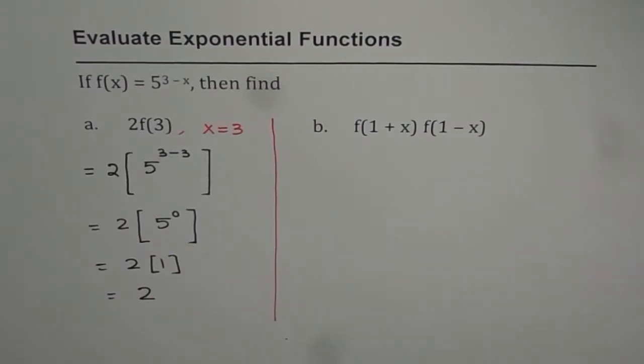So 2 times f(3), for the given function f(x) equals 5 to the power of 3 minus x, is 2. So that is our solution, the value of the given function. Now, let us see part B.